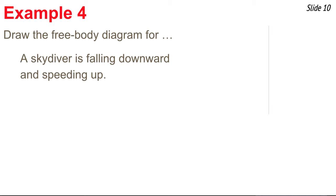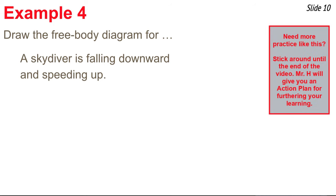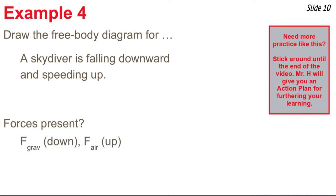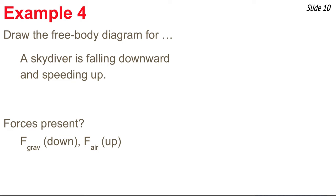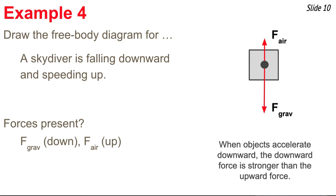Example four is our first case of acceleration: a skydiver falling downward and speeding up. The Earth pulls down on the skydiver — that's gravity. The other force is air resistance acting upward. We draw two arrows: gravity down and air resistance up. The skydiver is accelerating downward, so we make the downward force arrow bigger than the upward force arrow — not because it's moving downward, but because it's accelerating downward. An object moving down and speeding up has a downward acceleration, so the down arrow is longer.